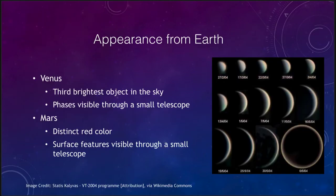First of all, what do we see from the Earth? Venus is the third brightest object in the sky — only the Sun and the Moon would be brighter. So it's one of the very easiest objects to see, either early in the morning right before sunrise, or in the evening right after sunset. Very prominent in the sky and very hard to miss because it is such a bright object.